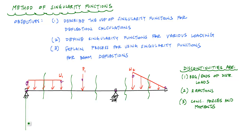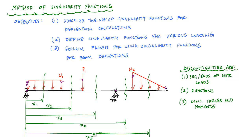Let's say I choose this as my origin here. I would need a first function here, my next cut would be here, next two — and you can see where I'm going with this. If I want to use the double integration method to solve this beam deflection out, I would need five different moment functions, which means 10 boundary conditions to solve for 10 unknown constants. This thing would take forever.